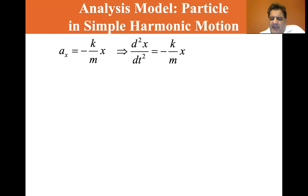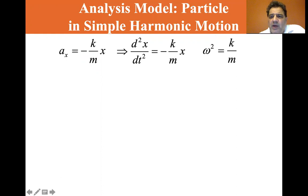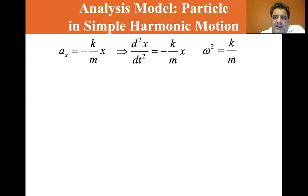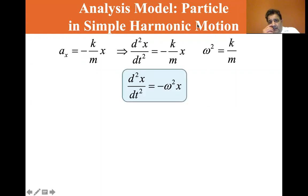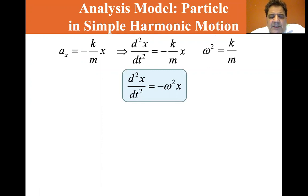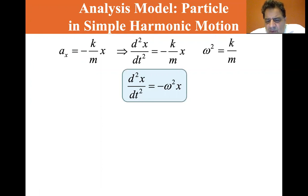The acceleration is equal to minus k/m, and we're going to do a substitution where we say omega squared is equal to k/m. So d²x/dt², the acceleration, is equal to minus omega squared times x.